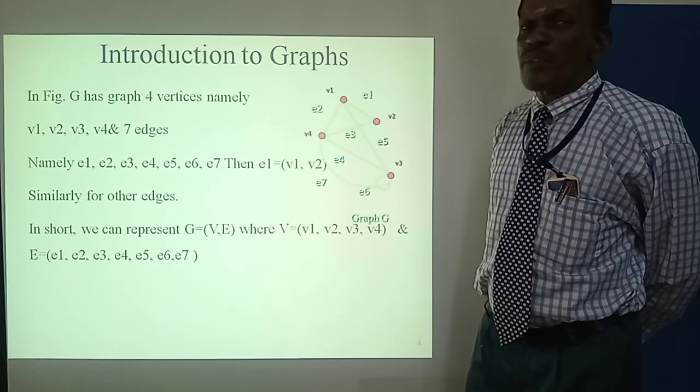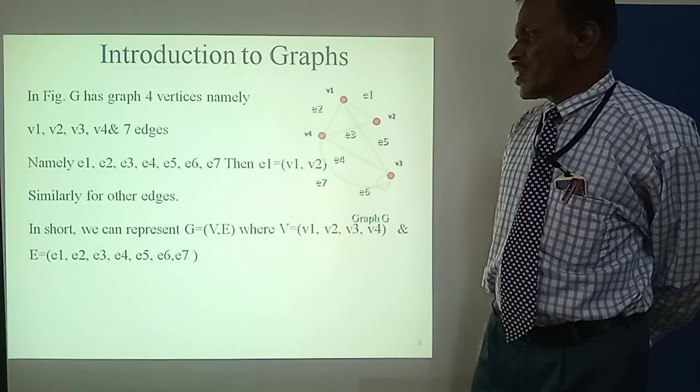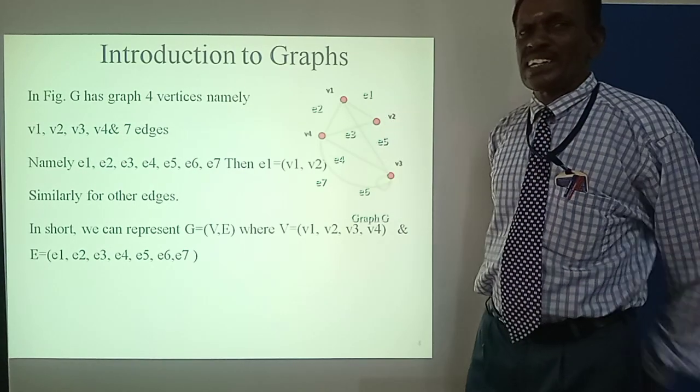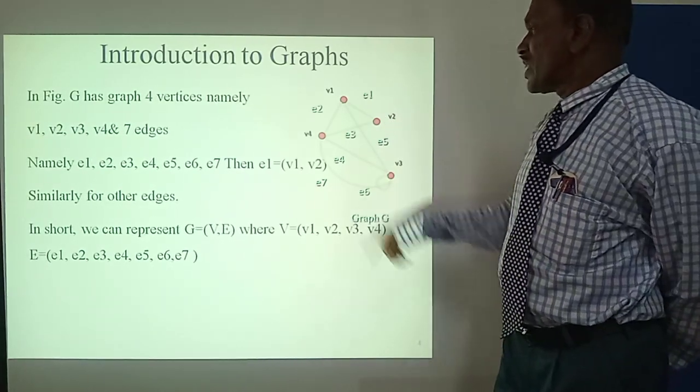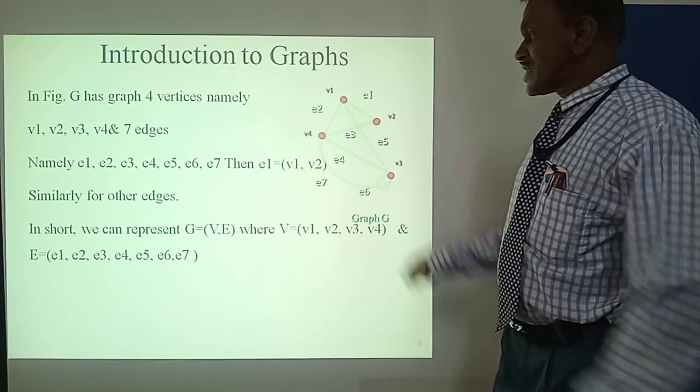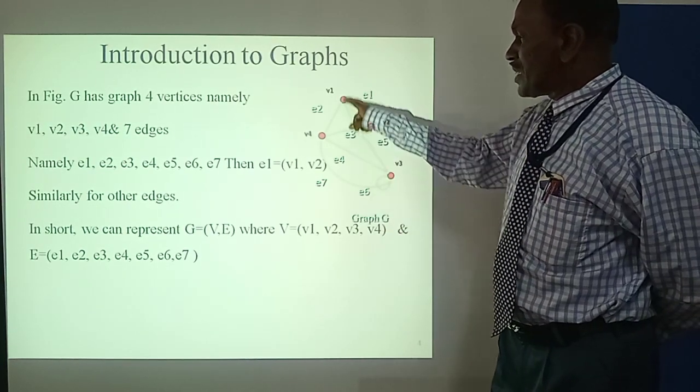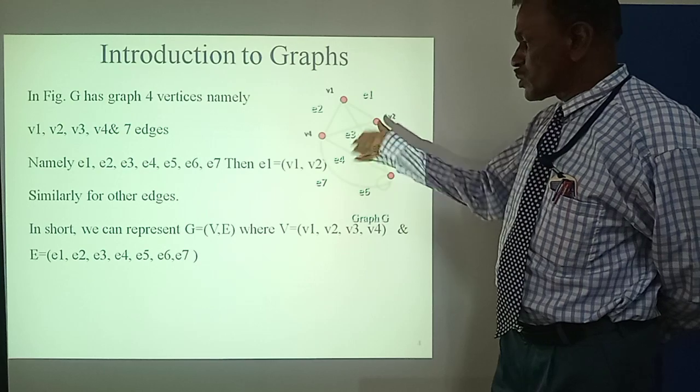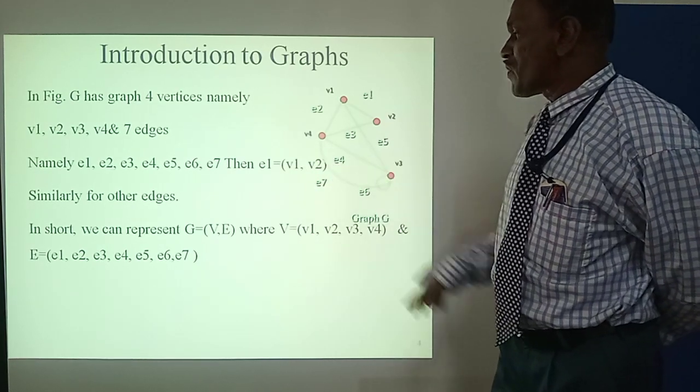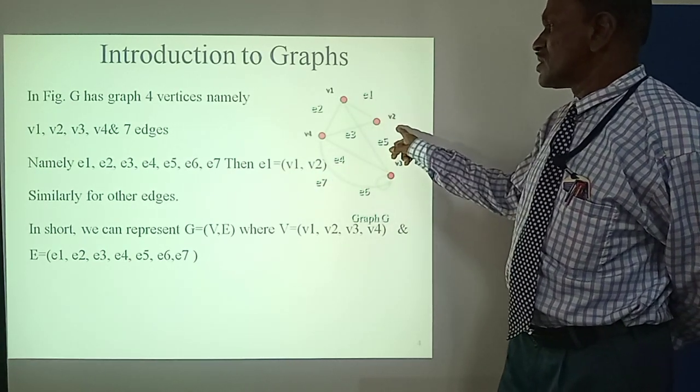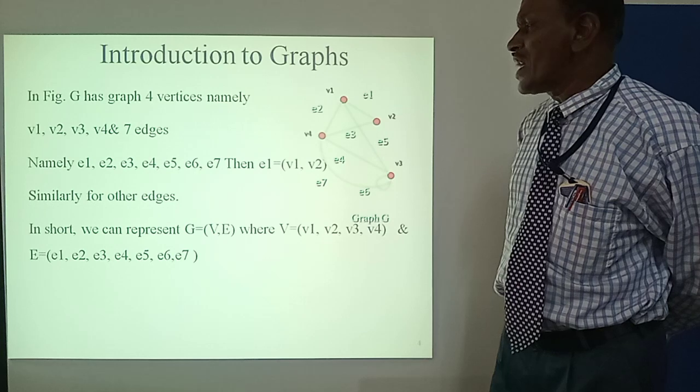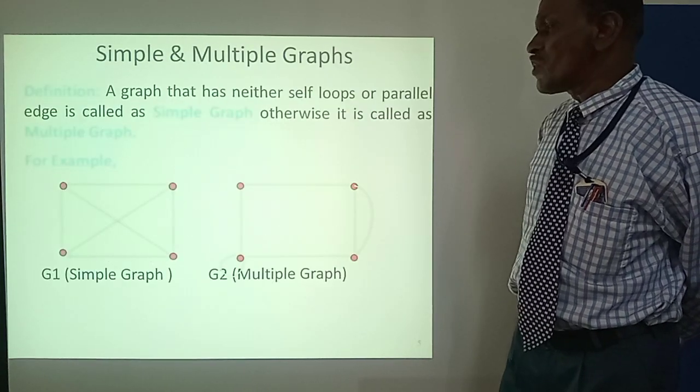This graph has 4 vertices, namely V1, V2, V3, V4, and 7 edges. The edges are E1, E2, E3, E4, E5, E6, E7. E1 means two points are connected. For example, E1 equals V1, V2, meaning these vertices are joined together.